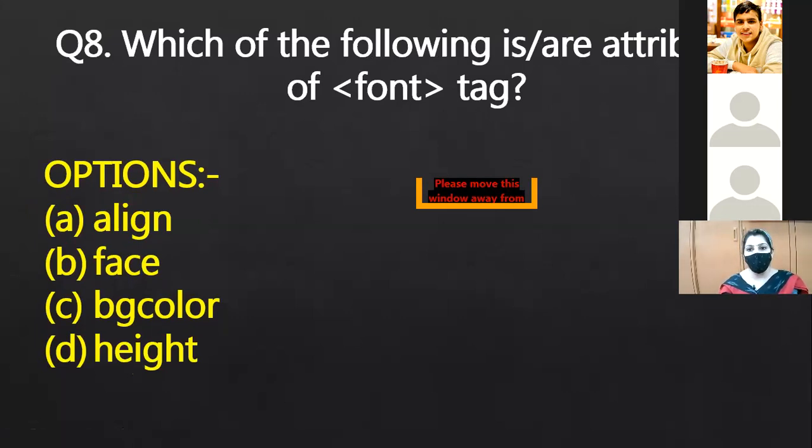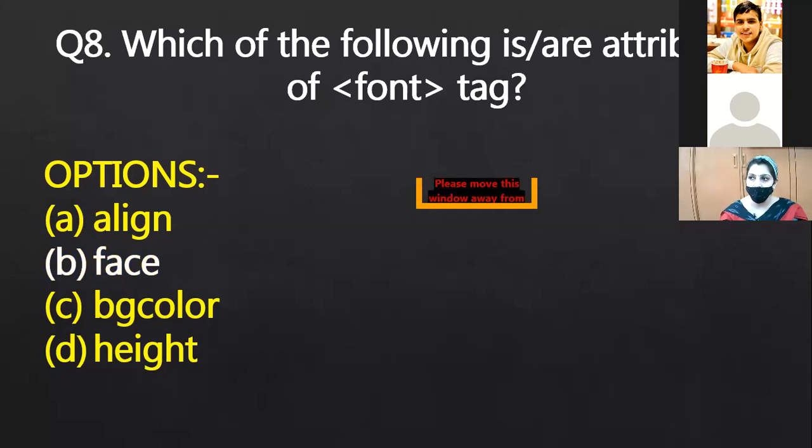Which of the following attribute are the attributes of font tags? So align belongs to P tag. Line belongs to heading tag, table tag. BG color belongs to body, table. Height can be set for table, image, table. So the attribute of font tag is face. And face will set font style.